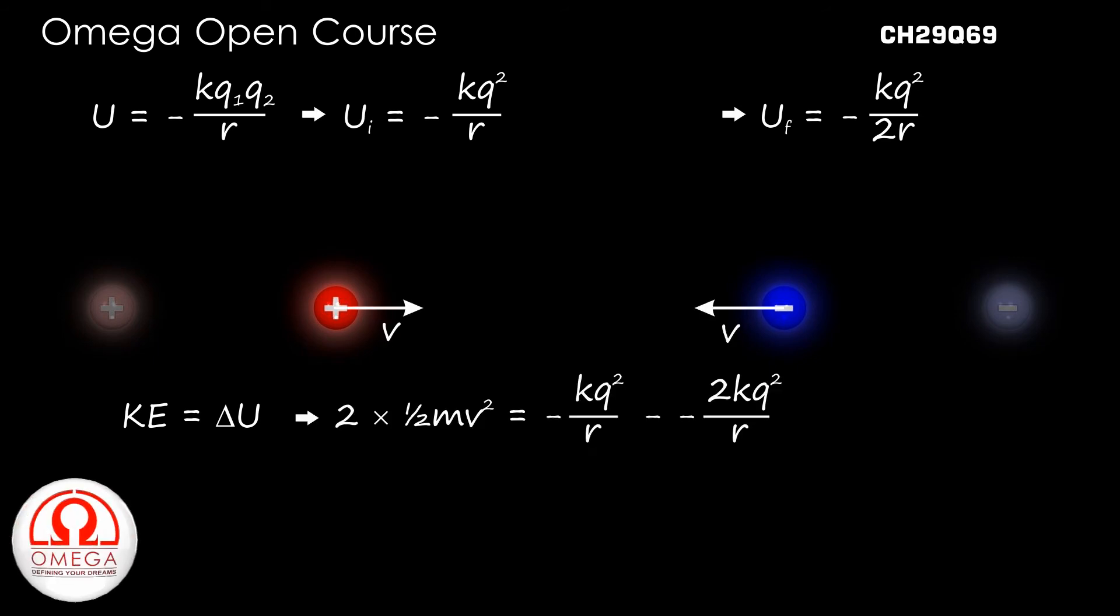Let the speed be V. Then 2×(½MV²) = -KQ²/R - (-2KQ²/R).